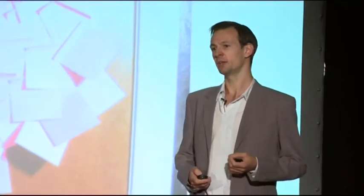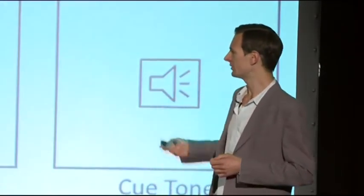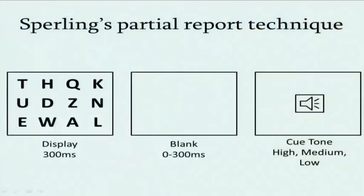In the 60s, a pioneering psychologist called George Sperling thought he'd found a way to prove that subjects really do see much more than they can remember. And this is what he did. He showed subjects letter displays exactly like the ones that you've just seen. But shortly afterwards, he played subjects a cue tone.